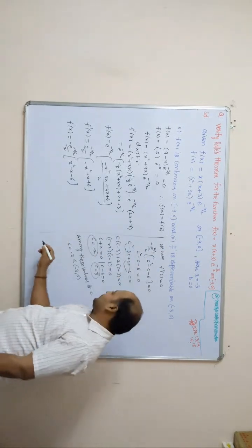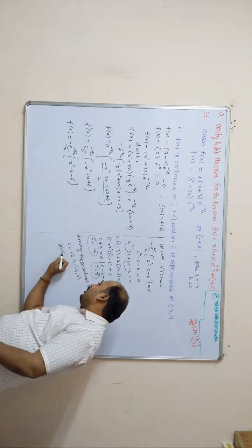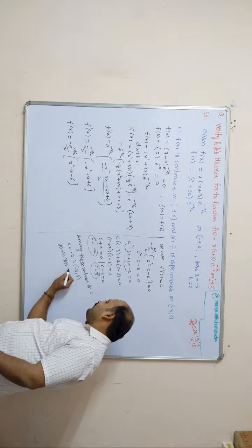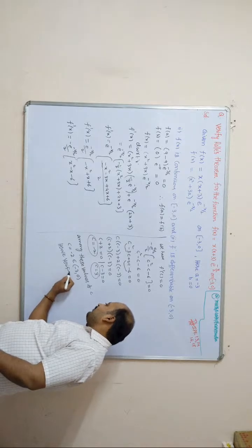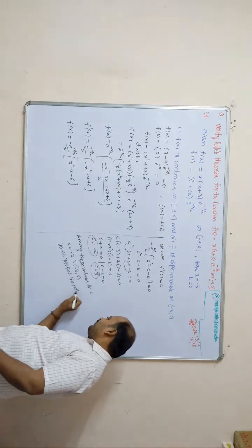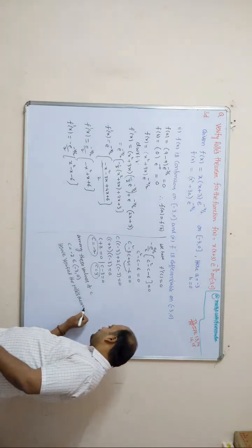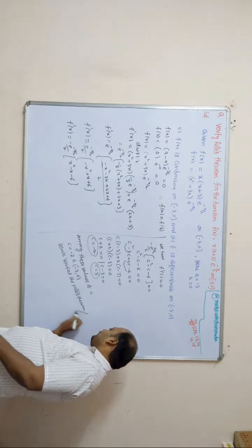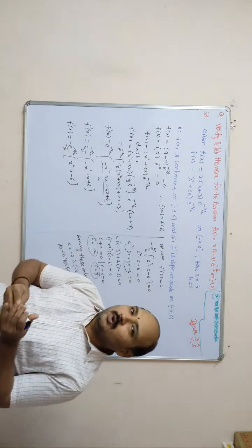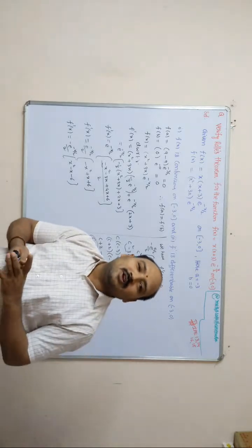Among these values, c = −2 belongs to the open interval (−3, 0), while c = 3 does not. Therefore, Rolle's theorem is verified for the given function.